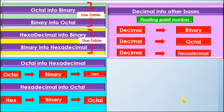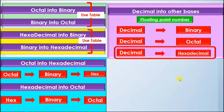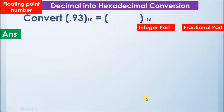In the next section we will see how to convert decimal into hexadecimal using floating-point numbers. We are given the number 0.93 in decimal and we have to convert it into hexadecimal.